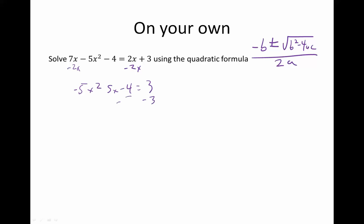Then we're going to subtract 3 from both sides and get negative 5x squared. This was a minus 5x. I don't know what happened there. No, what happened? No, that's a positive 5x. Sorry about that. That's plus 5x, and that's going to be minus 7 equals 0. So my a is negative 5, my b is 5, and my c is negative 7.